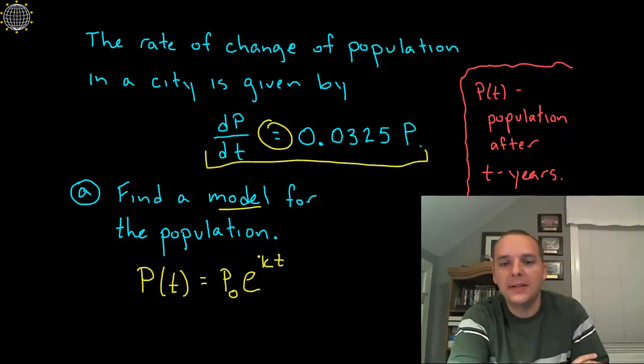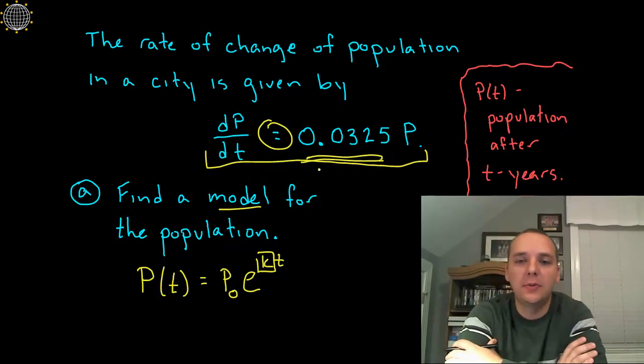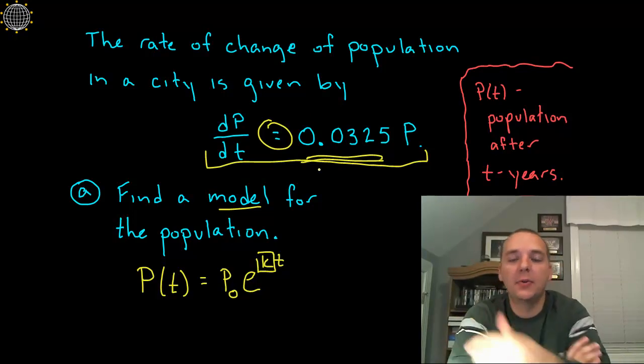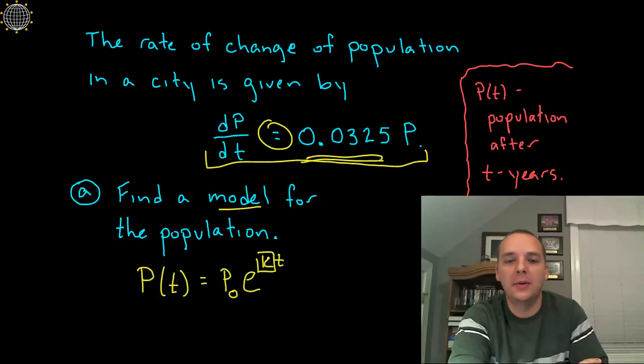Now this K right here is our growth rate, and in the last video we unpacked this a little bit more fully, but it turns out that this number here, this 0.0325, that's our growth rate, that's our multiplicative factor that our population gets multiplied by to match the growth rate. And so that would seemingly indicate that K is this 0.0325 number.